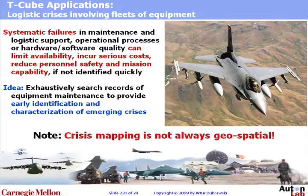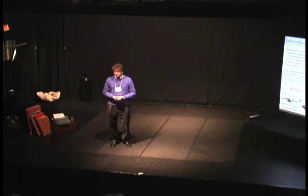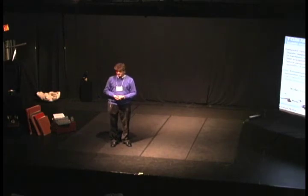Crisis mapping does not have to be always geospatial. We can also detect crises using similar technology and similar data representational tricks to discover interesting patterns in infrastructure data, which can be expressed with very many dimensions. You can replace this jet fighter with a toaster, a coffee maker, or maybe a part of irrigation infrastructure in sub-Saharan Africa. The idea is to be able to, as quickly as possible, identify new patterns of failure of these devices in order to mitigate infrastructure crises.